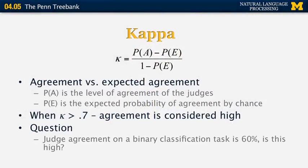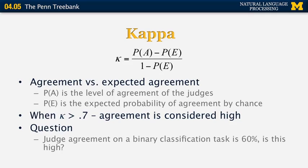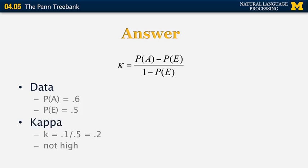Here's a question: if judge agreement on a binary classification task is 60%, is this high enough? If we plug the numbers into the kappa formula, P(A) = 0.6, and the expected agreement by chance given two classes is 0.5. Computing kappa gives 0.1 in the numerator divided by 0.5 in the denominator, equal to 0.2 or 20%. As stated, 20% is far from an acceptable inter-judge agreement, so in this case we can say the task is not well defined.